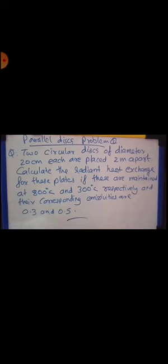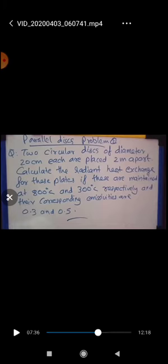To start the problem, two circular disks of diameter 20 centimeter each are placed 2 meter apart. Calculate the radiant heat exchange for these plates if these are maintained at 800 degree centigrade and 300 degree centigrade respectively and their corresponding emissivities are 0.3 and 0.5. This is the question.